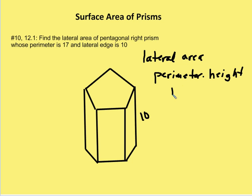And the height happens to be the lateral edge. So we end up with the perimeter, which is 17 times 10. So my answer is going to be 170 units squared. Thank you.